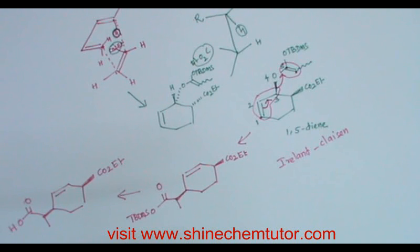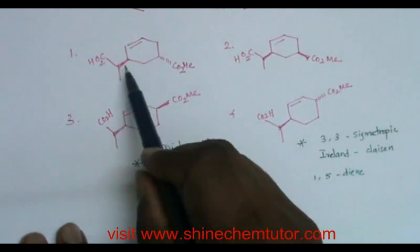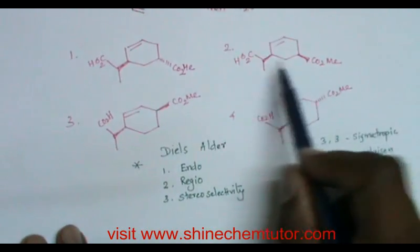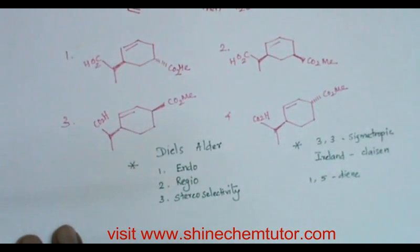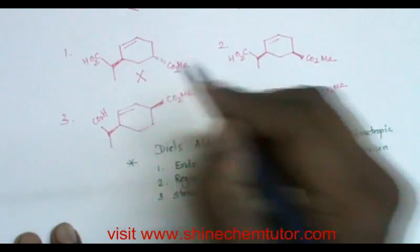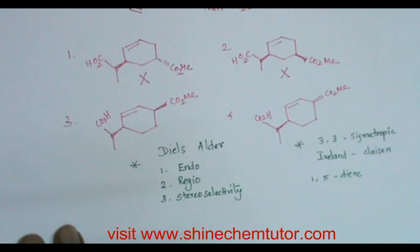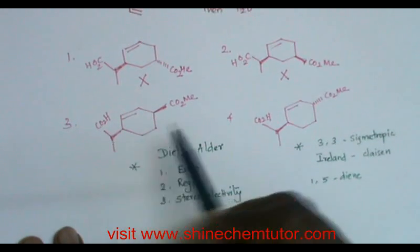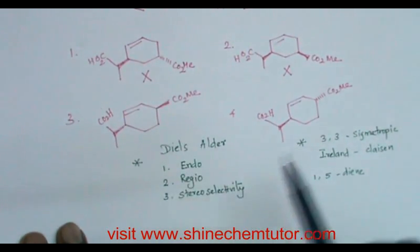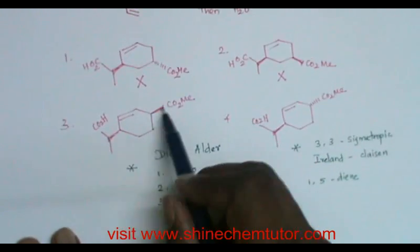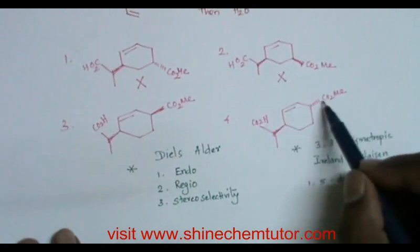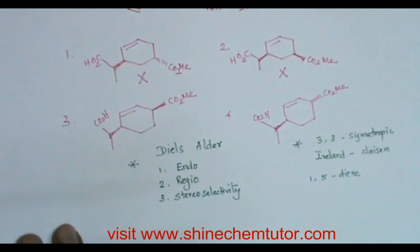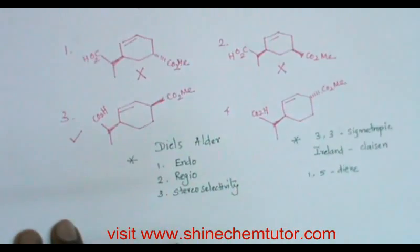Looking at the given options: the first two options show the two substituents on 1,3-carbon atoms. We didn't get a 1,3-substituted cyclohexene — we got 1,4-substituted, so those two options are eliminated. The remaining question is whether the two substituents are cis or trans. One option shows cis and another shows trans. Since I got the cis product, that should be the answer.